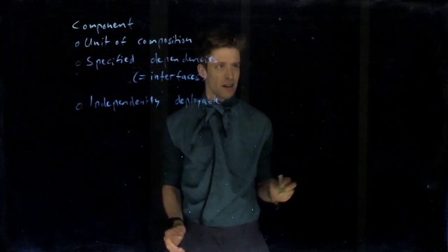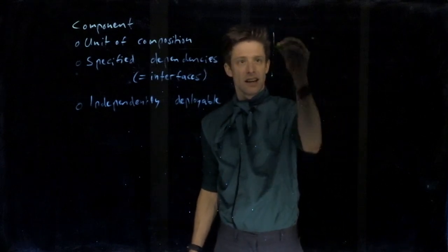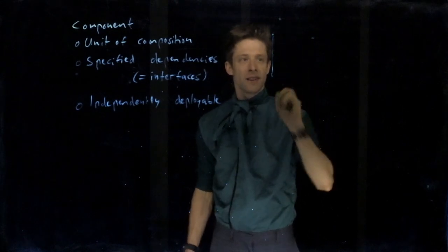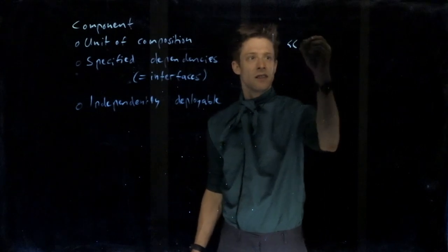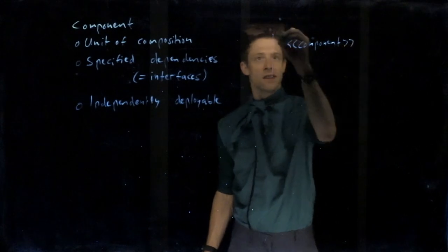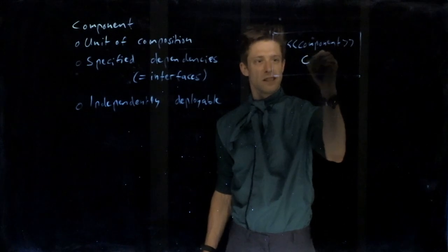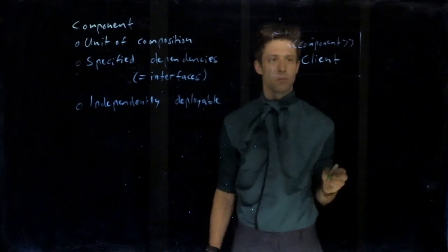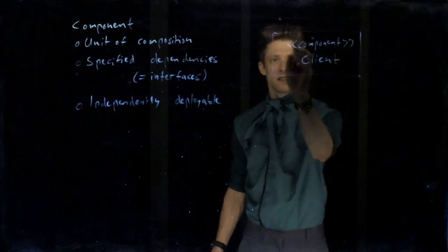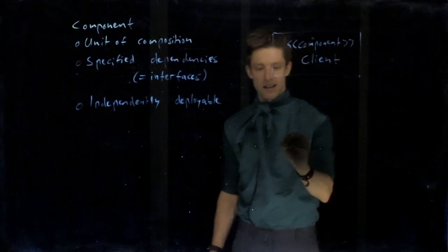Now, how do we describe this in UML? We have the component diagram and there we have components. They look like classes. It's a box. Now, my pen is giving up. So we have components. For example, let's say we have the client. It's one component. They have this component stereotype, so the double quotation marks, the angled one, component and then the name client.